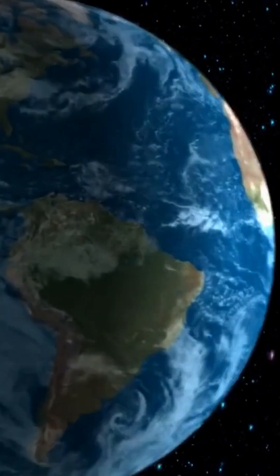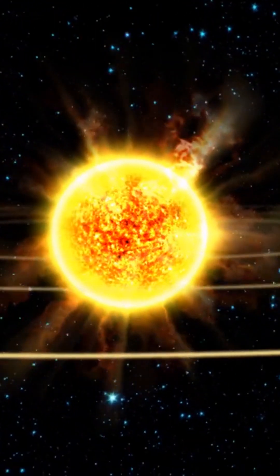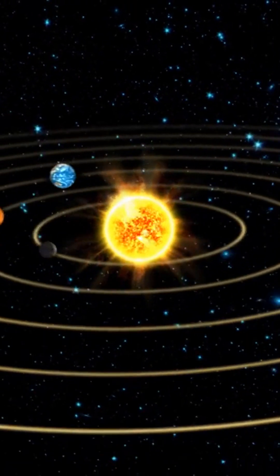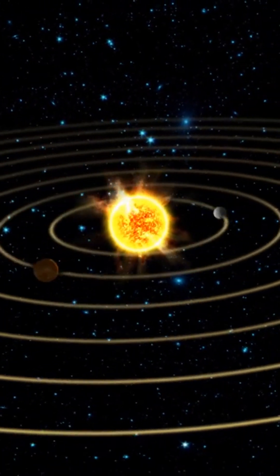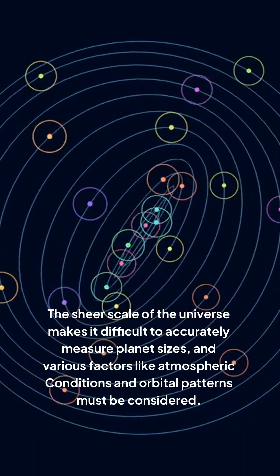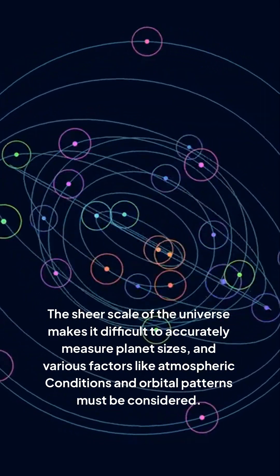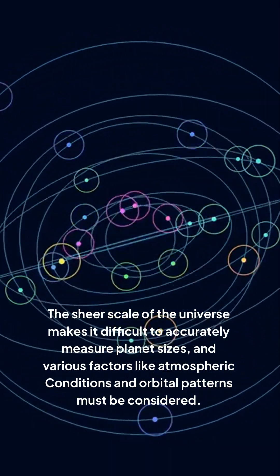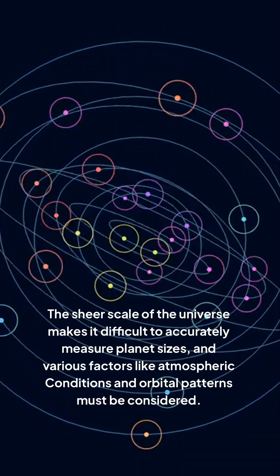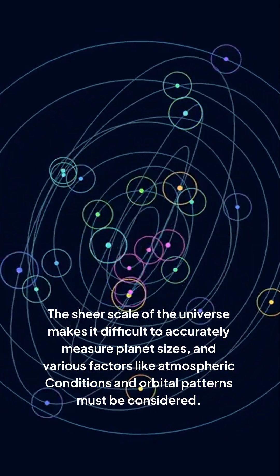Astronomers face numerous challenges when categorizing and understanding planets, especially when it comes to their sizes and classifications. The sheer scale of the universe makes it difficult to accurately measure planet sizes, and various factors like atmospheric conditions and orbital patterns must be considered.